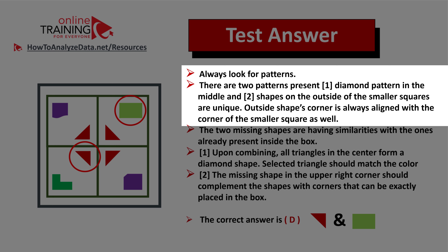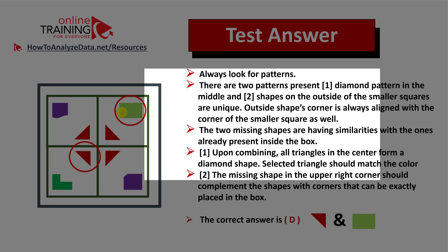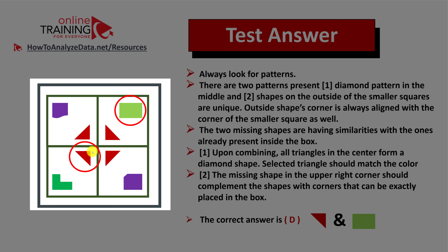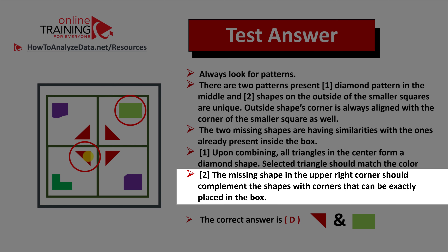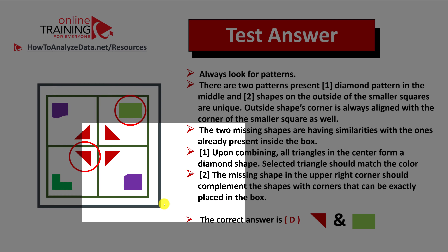Outside shape corners are always aligned with the corner of the smaller square. The two missing shapes also have similarities with other shapes in the box. Upon combining, all triangles in the center form a diamond shape. You should look for the triangle which matches the color, and upon combining it should build a diamond. For pattern two, the missing shape in the upper right corner should be a green rectangle that complements the existing shapes. There is also a pattern of green color on opposite sides of the squares, same as purple colors. The correct answer is Choice D.